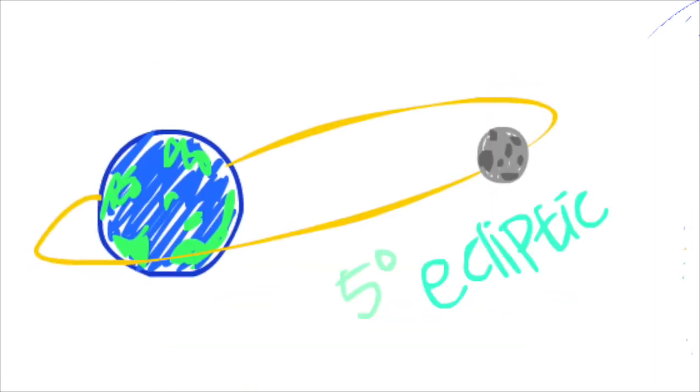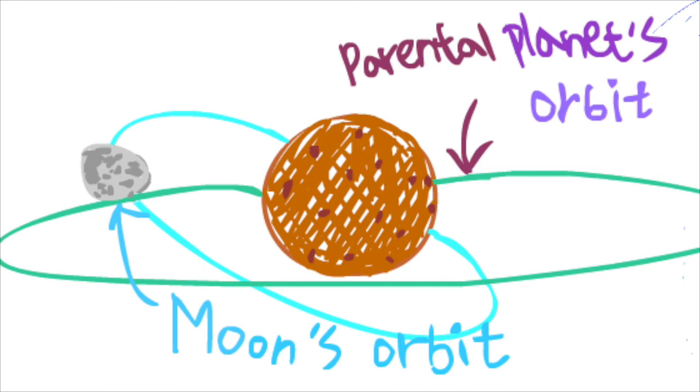Furthermore, our moon's orbit is at 5 degrees, which is on the ecliptic orbit of the parental planet, the Earth. But those oddly shaped moons usually don't match up with the parental planet's orbit.